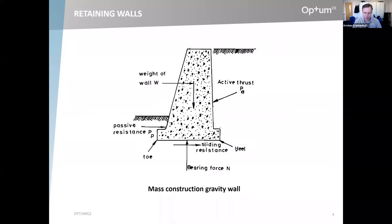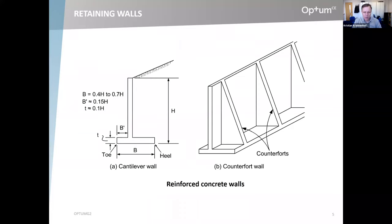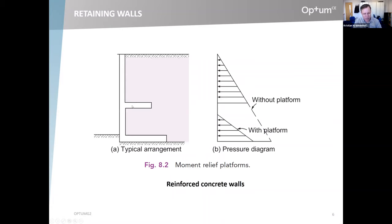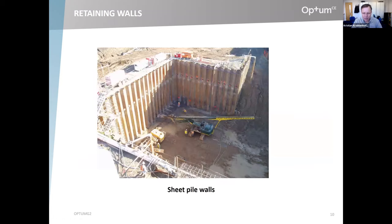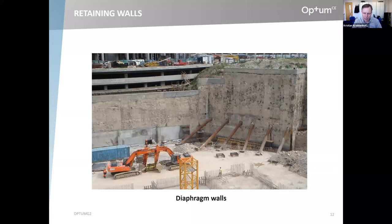Just to introduce with a few pictures — retaining walls come in all kinds of shapes, sizes, and materials: mass construction gravity walls, reinforced concrete walls with and without moment relief platforms (which basically relieve earth pressure on the wall horizontally), crib walls, gabion walls — steel mesh cages filled with rock material forming building blocks. Sheet pile walls, anchored sheet pile walls, and diaphragm walls with supports in the form of rakes.